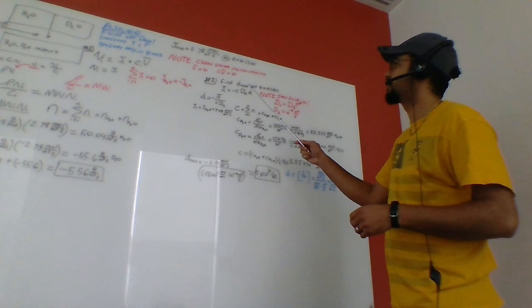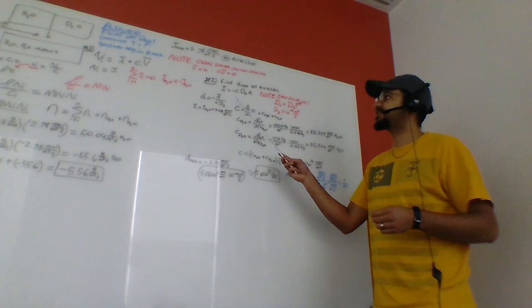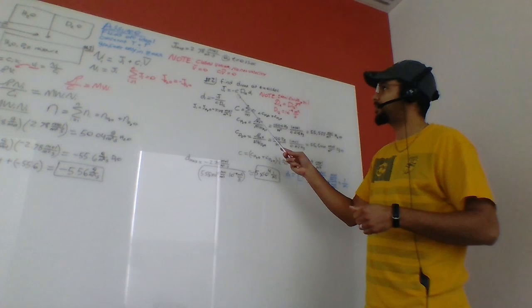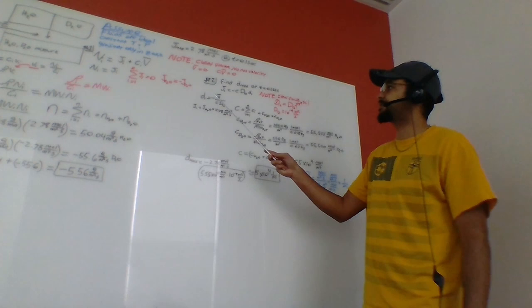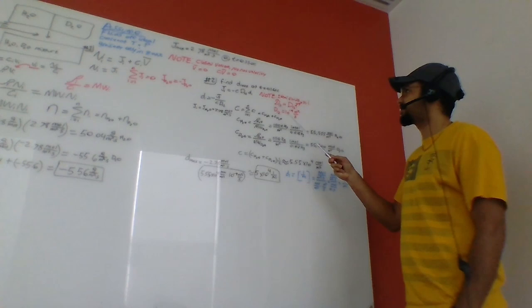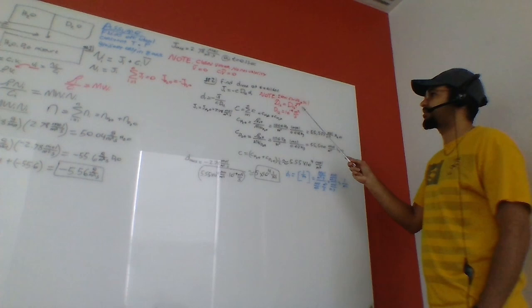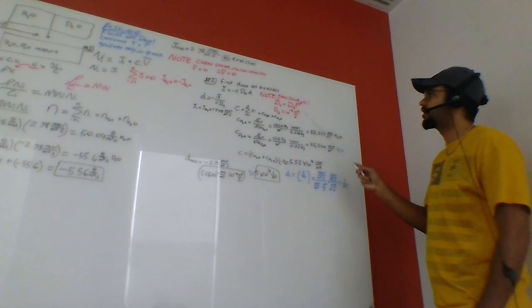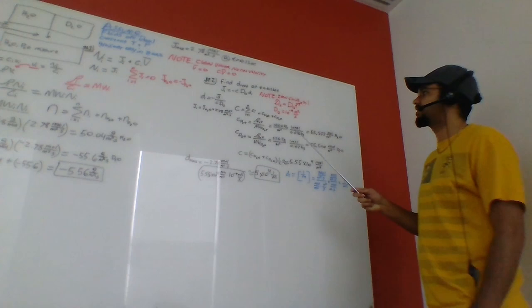Moving on to the second question, we want to find the maximum driving force at time equals 0.1 seconds. The molar diffusive flux equals the negative total molar concentration times fixed diffusivity times the driving force. We can rearrange to find the driving force. Since these are ideal fluids, the thermodynamic factor becomes 1, so the fixed diffusivity equals the Maxwell-Stefan diffusivity.